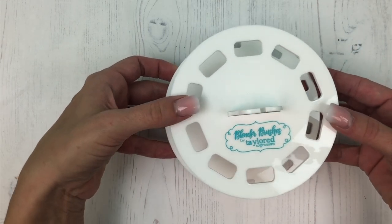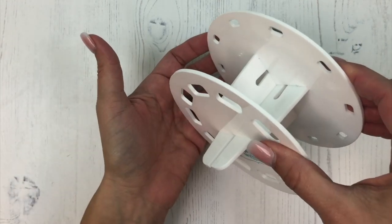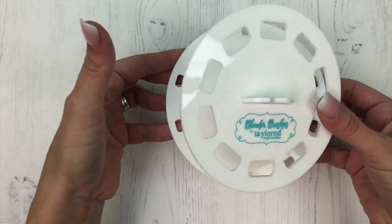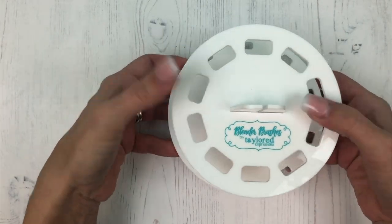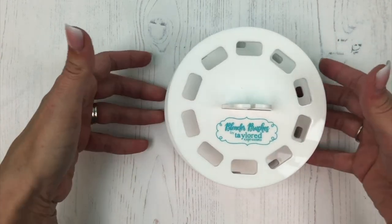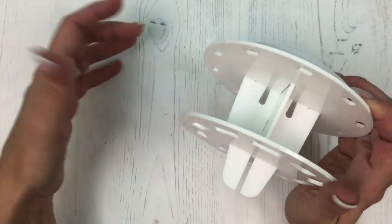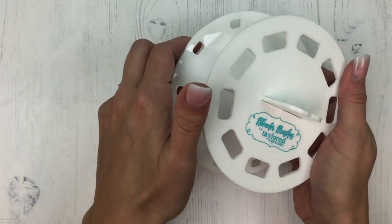If you try to pinch the caddy while you move it like this, that piece is going to pop off, especially when you have all of your brushes in it. If you try to pick it up by squeezing it on the sides here, this is going to pop out pretty easily, just like that.